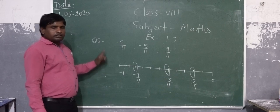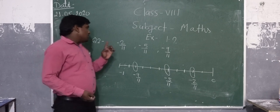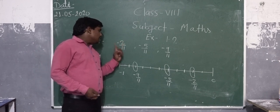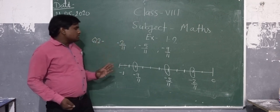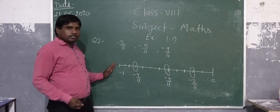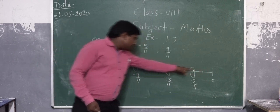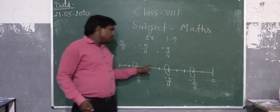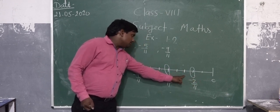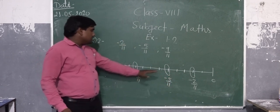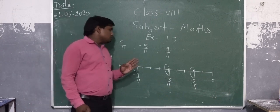This question is related to question number 1. The procedure is: we check the numerator and denominator. If the denominator is greater than the numerator, then the numbers lie between 0 and minus 1. Then check the denominator — it is 11 — so we divide this line into 11 equal parts. We start from minus 1 by 11, minus 2 by 11, minus 3 by 11, minus 4 by 11, minus 5 by 11, and so on. This is the solution of question number 2.